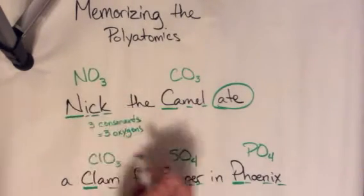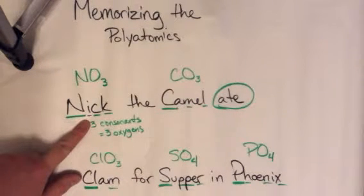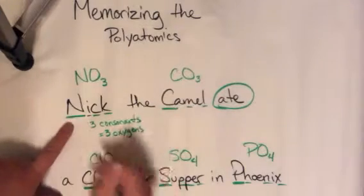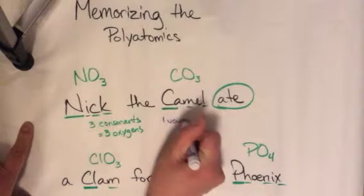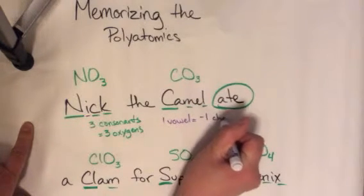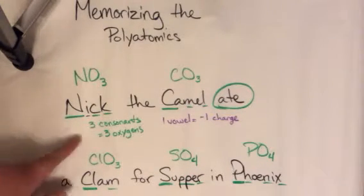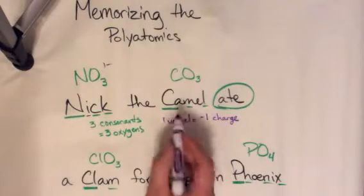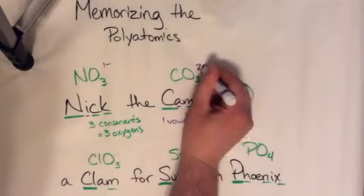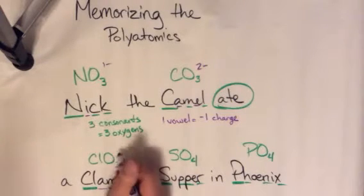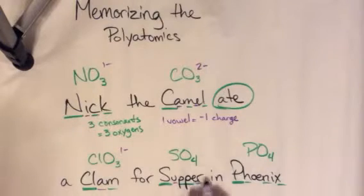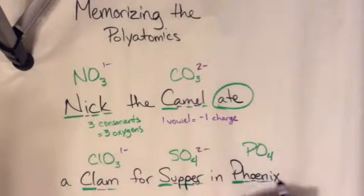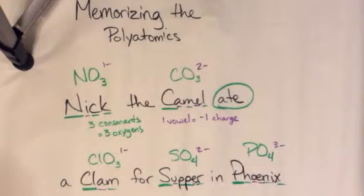Now let's count the vowels. I only have one vowel here — A, E, I, O, U are the vowels. So one vowel equals a negative one charge. The vowels are the charge. So in this case nitrate would have a one-minus charge. And for each one of these you have to know the formula and the charge — you can't just know the formula. "A" and "E" — that's two, so that would be two-minus. "A" — one, that's one-minus. "U" and "E" — that's two-minus. "O", "E", "I" — that's three-minus. So that's five polyatomics you can get if you know this mnemonic.